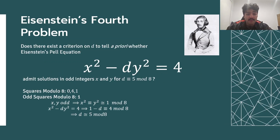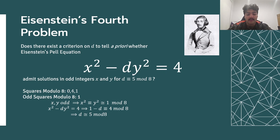In 1844, a list of open problems of Eisenstein were published. Among these was Eisenstein's fourth problem, the focus of this seminar: does there exist any criterion a priori to determine the existence of odd integer solutions to the Eisenstein-Pell equation x squared minus dy squared equals to 4, for a positive integer d congruent to 5 mod 8? That is, is there any condition on the values of d which tells us if there are such solutions to the equation?